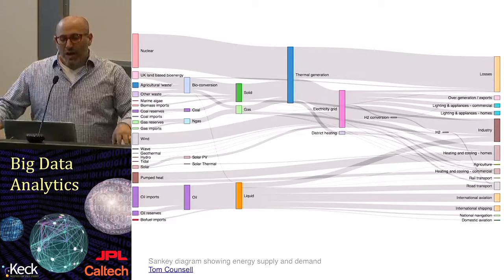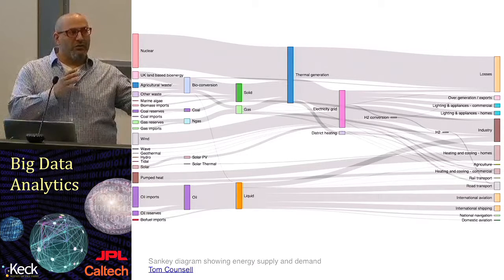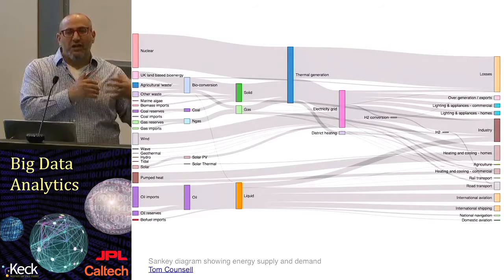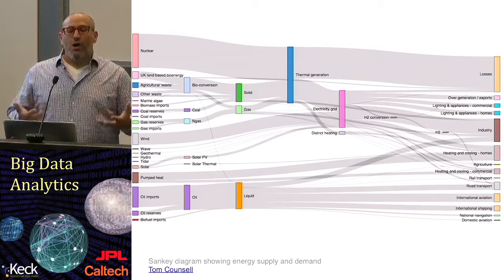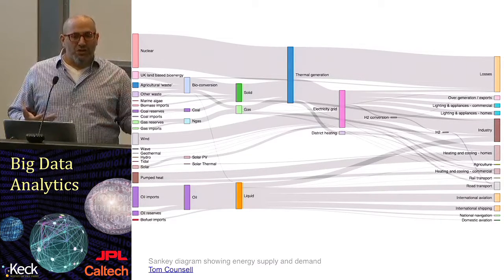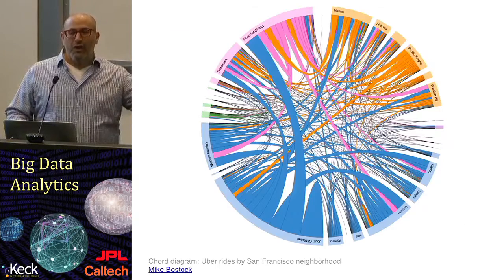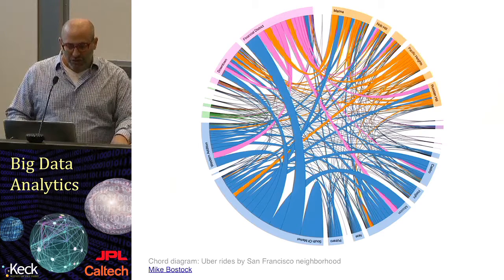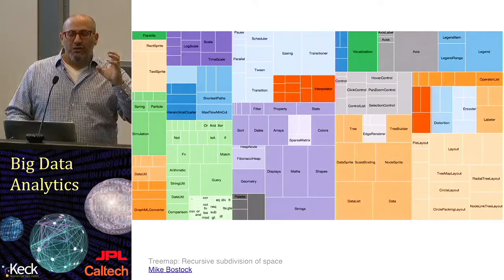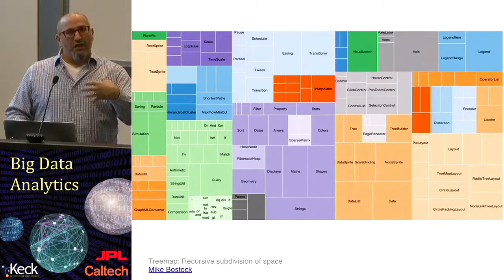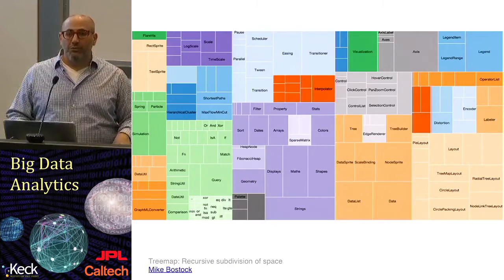When thinking about how to choose which type of representation to use for your own data, think about what are the particular dimensions that have the most importance, and then which of these different encodings bring out those dimensions. That's one of the ways you will end up ensuring that the most important parts of your data become the most perceptible.